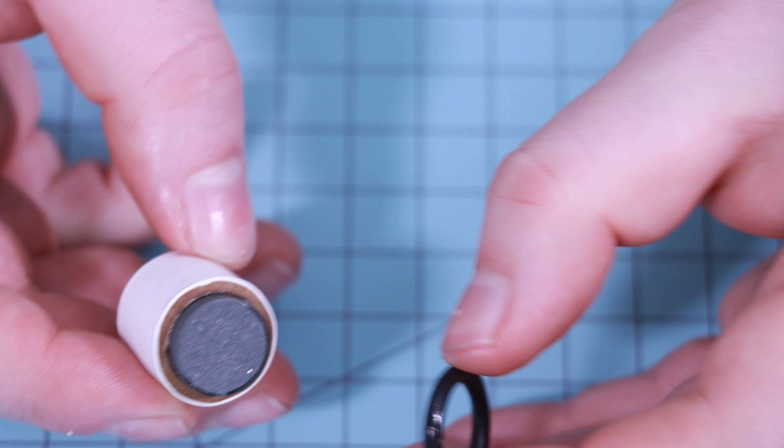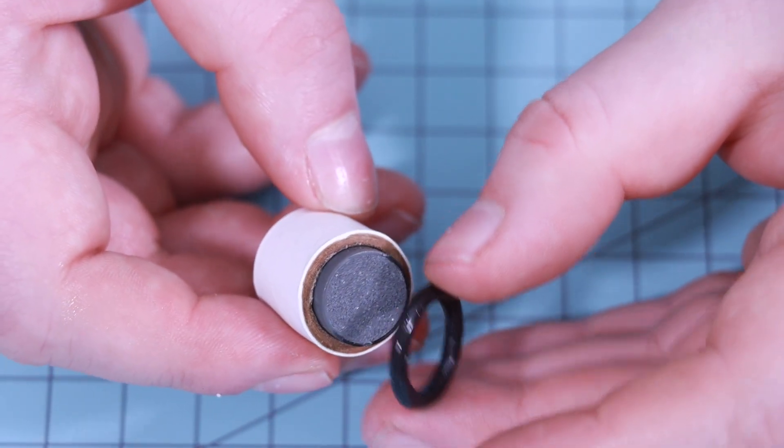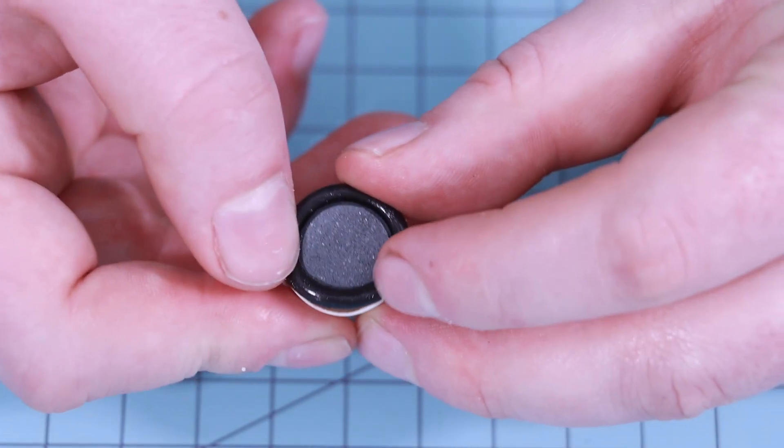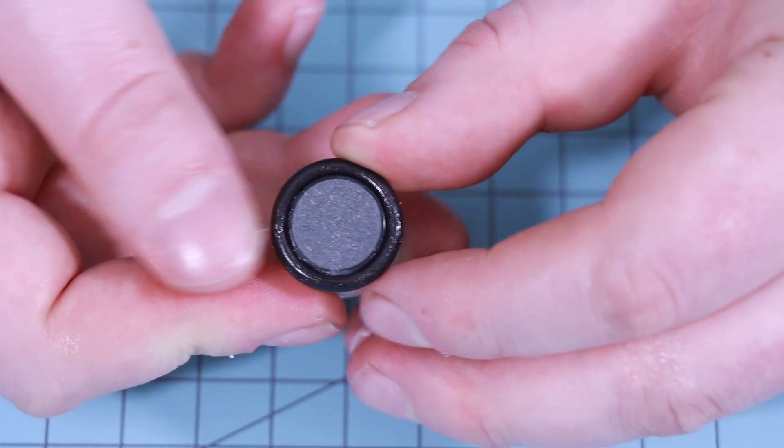Now I take the delay o-ring and gently slide it over the top of the delay grain that's protruding from the delay insulator.